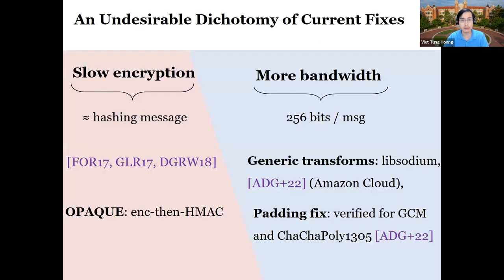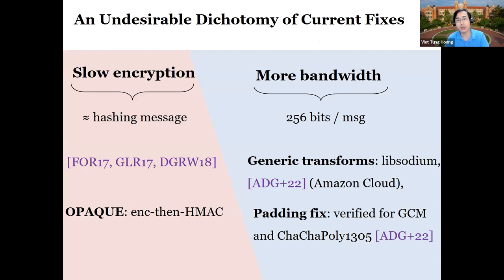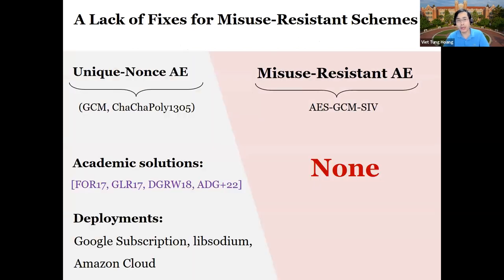Partly because of this, current solutions are somewhat frustrating. Earlier schemes tend to be pretty slow — as slow as hashing the entire message. Recent schemes are faster but consume more bandwidth than necessary, say two additional blocks per message. In addition, while unique-nonce AE schemes like GCM receive a lot of attention from both industry and academia, there has been no effort in fixing misuse-resistant AE schemes like AES-GCM-SIV.